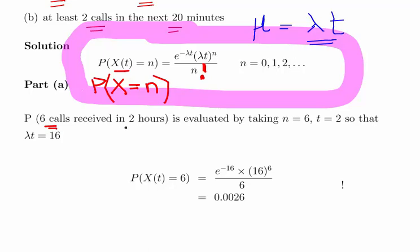So the probability of 6 calls in the next 2 hours, well n is equal to 6 in this case, very clearly. Now lambda t is equal to 2 and that means that lambda times t is equal to 16. Lambda is the rate per hour, t is the number of hours, so we should expect 16 in 2 hours, which makes sense.